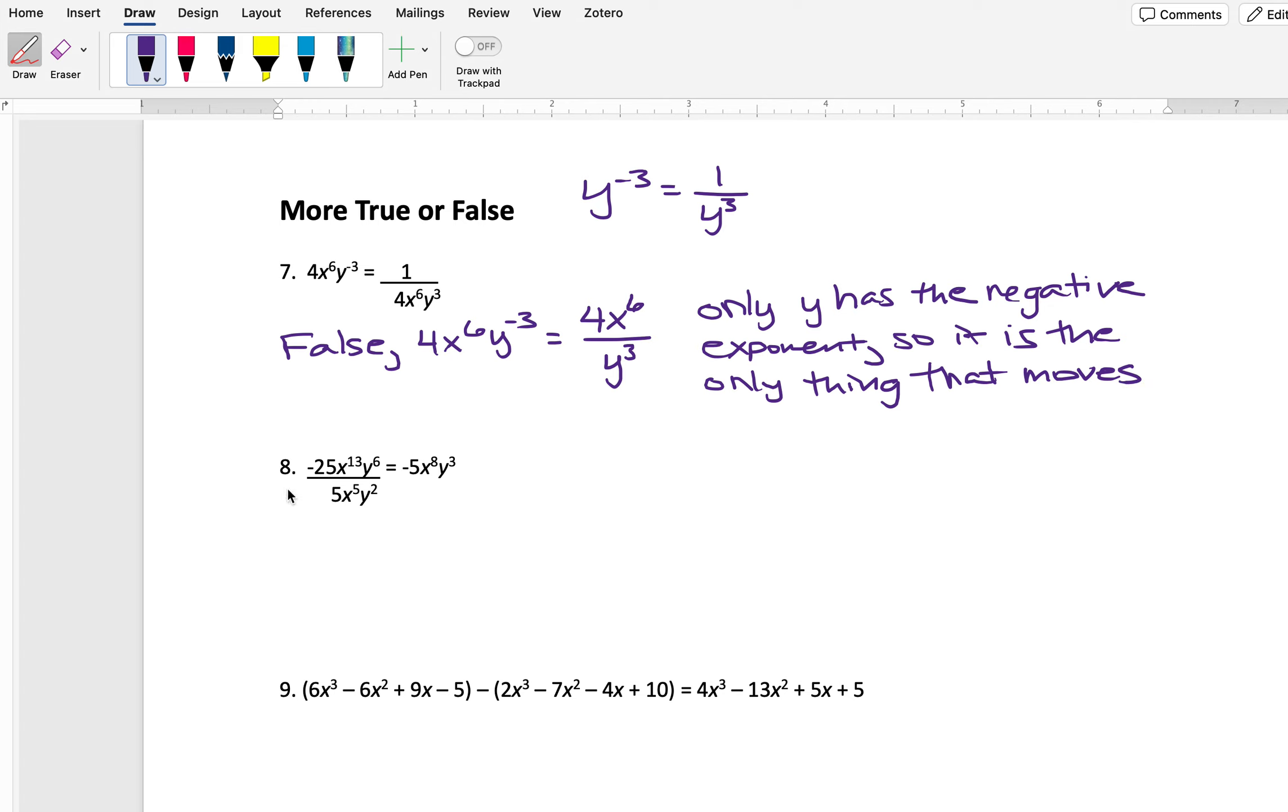Okay, let's look at number 8. We have negative 25x to the 13y to the 6 over 5x to the 5th y squared. Does that equal negative 5x to the 8y to the 3rd? So looking at this, remember what we said before about the power being how many times something is multiplied out. So what we have for the y's, for example, is we have y to the 6th, which means that y is multiplied by itself 6 times. So I have y 6 times here, and then when I have that over y squared, that's y multiplied by itself twice. Now I can cancel common factors from the top and bottom of the fraction. So 2 of the y's on the top would cancel with 2 of the y's on the bottom, and that means I have no more y's left in the denominator. So what I have left here is 4 y's in the numerator.